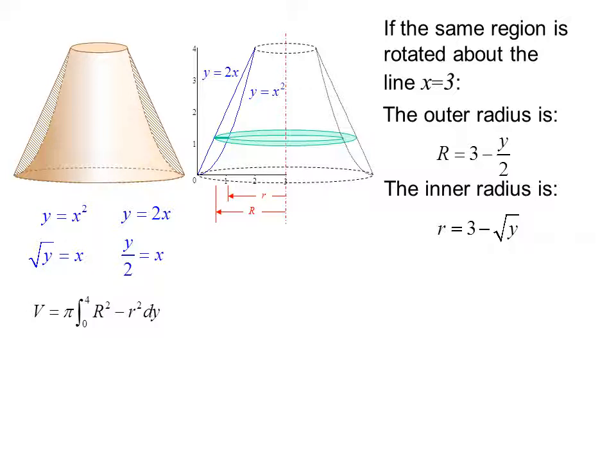Remember, the volume is pi times the integral from big r squared minus little r squared dy. So in this case, we have pi times the integral from 0 to 4 of 3 minus y over 2 quantity squared minus 3 minus radical y quantity squared dy.